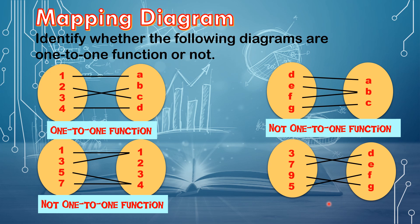For the last diagram, the domain values 3, 7, 9, and 5 each have exactly one pair in the range: 3 is paired to E, 7 is paired to D, 9 is paired to G, and 5 is paired to F — no repetition. Therefore, this diagram is a one-to-one function.